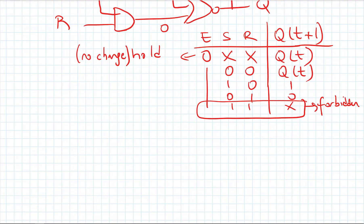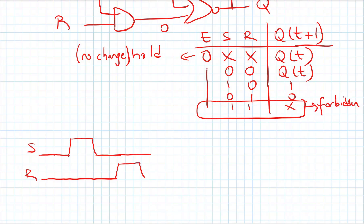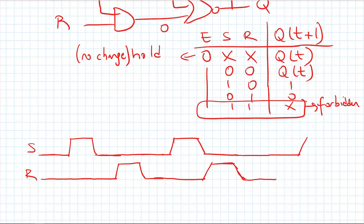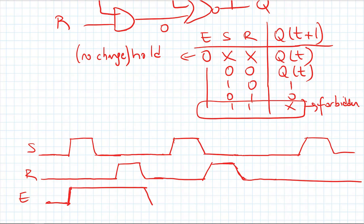Similarly, let's do a timing diagram. Let's say I have this S signal — I give a set here. This is my R signal — I give a reset here, then another set, then a reset. S and R are given like this, and I have this enable signal — I enable it here and it goes down here. So I have given these S, R, and enable signals, and we need to find the Q signal.